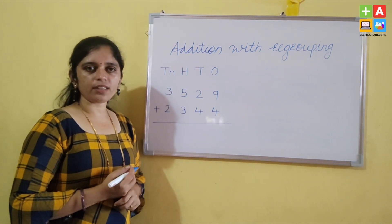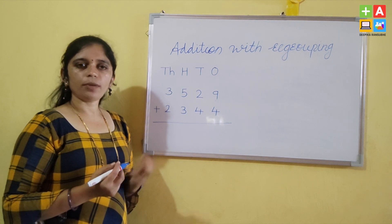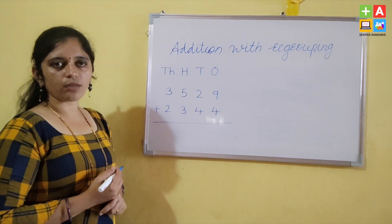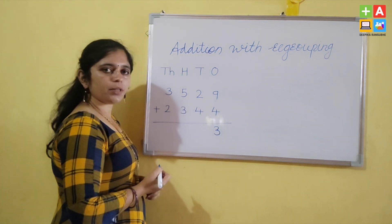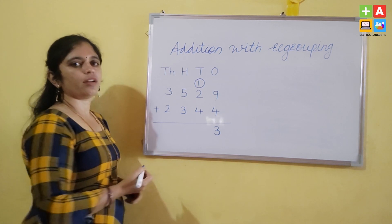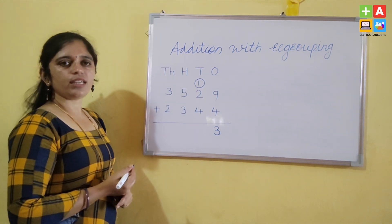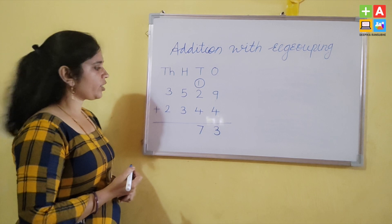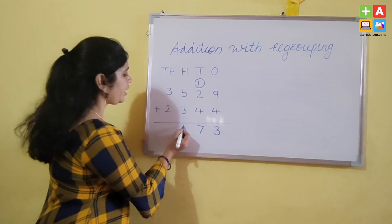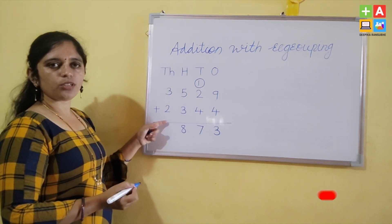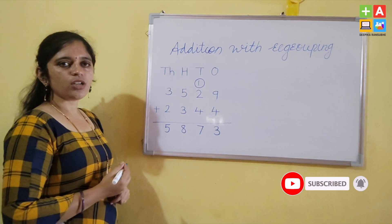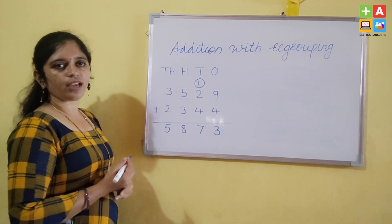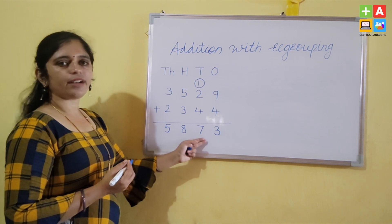I explained how to add bigger numbers in the last video using finger marks. Now, 9 plus 4 equals 13. Write down the number 3 on the bottom and carry the number 1. So 2 plus 1 is 3, and 3 plus 4 gives us 7. Next, 5 plus 3 is 8, and 3 plus 2 is 5. So when we add 2,344 to 3,529 we get the answer 5,873.